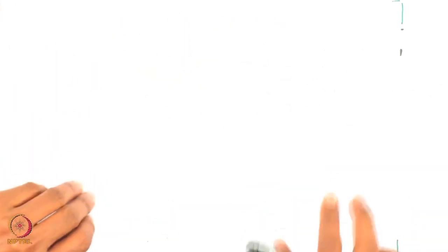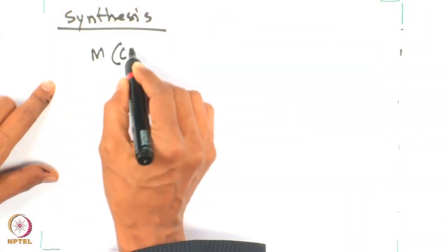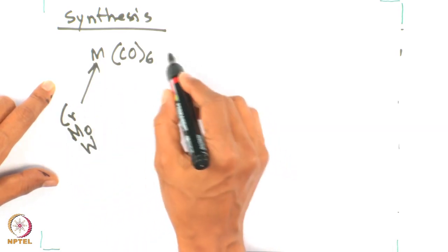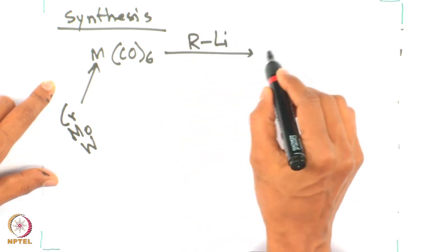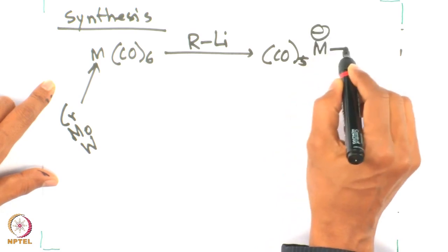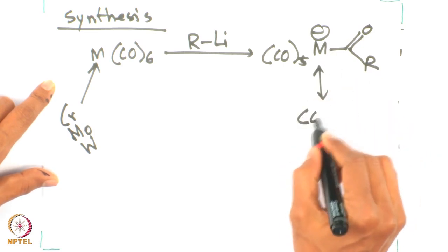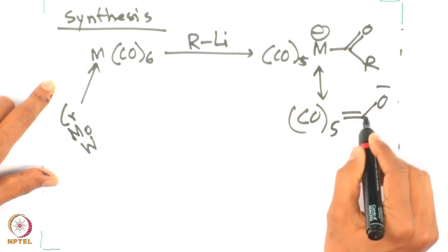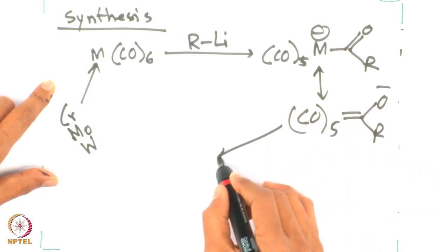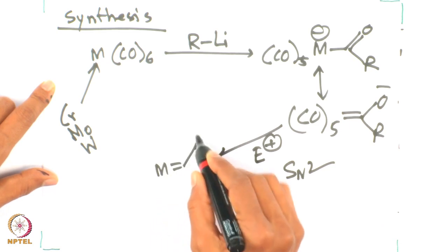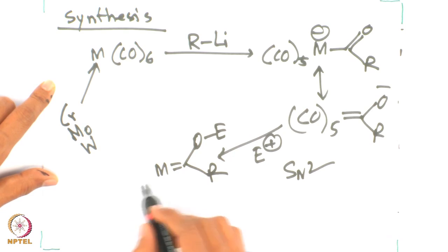Let us look at the synthesis of this carbene — it is quite interesting and straightforward, I would say. If you have a metal hexacarbonyl species — the metal could be chromium, molybdenum, tungsten and so on — you can react it with an organolithium reagent. From there you get an intermediate that is a resonating structure between two species, and then you can put in an electrophile. Basically this is an SN2 reaction from which you can get your product — that is the Fischer carbene.